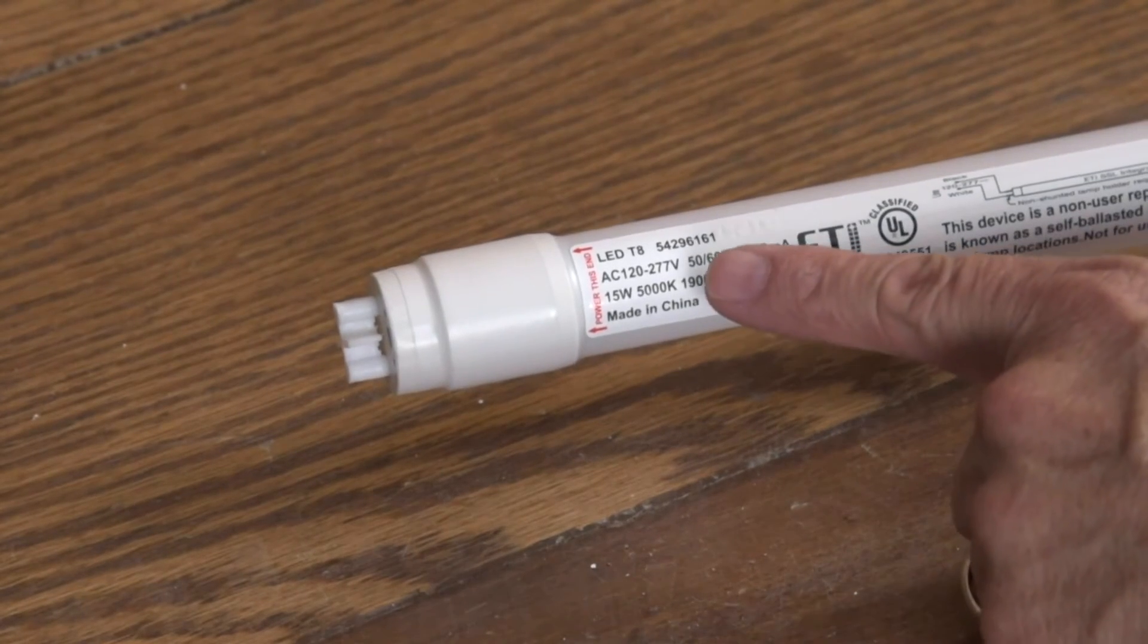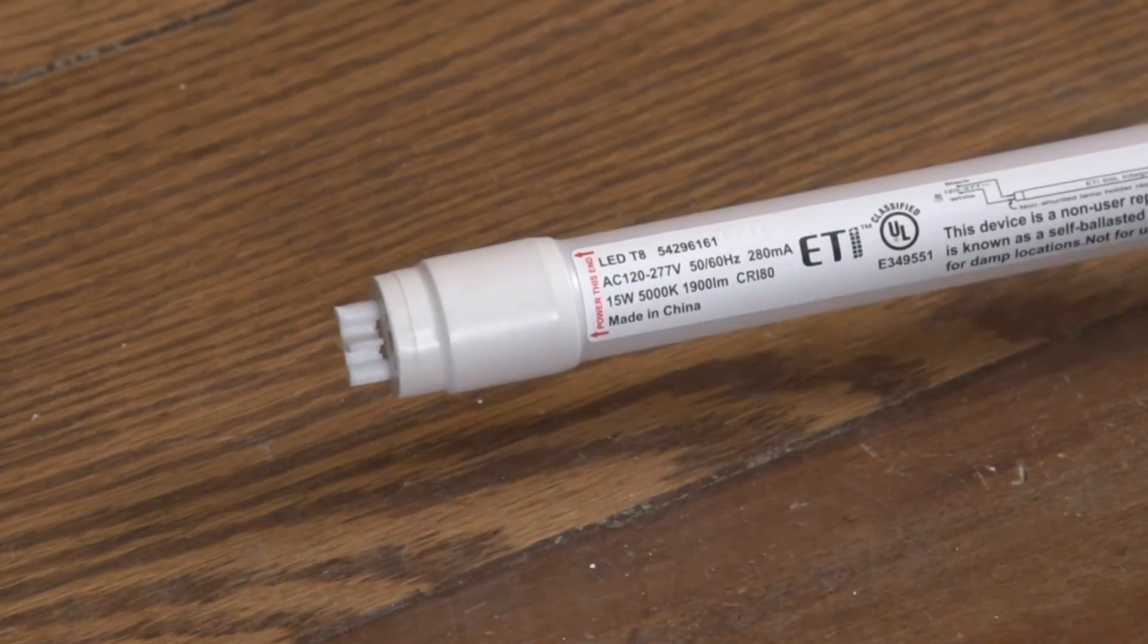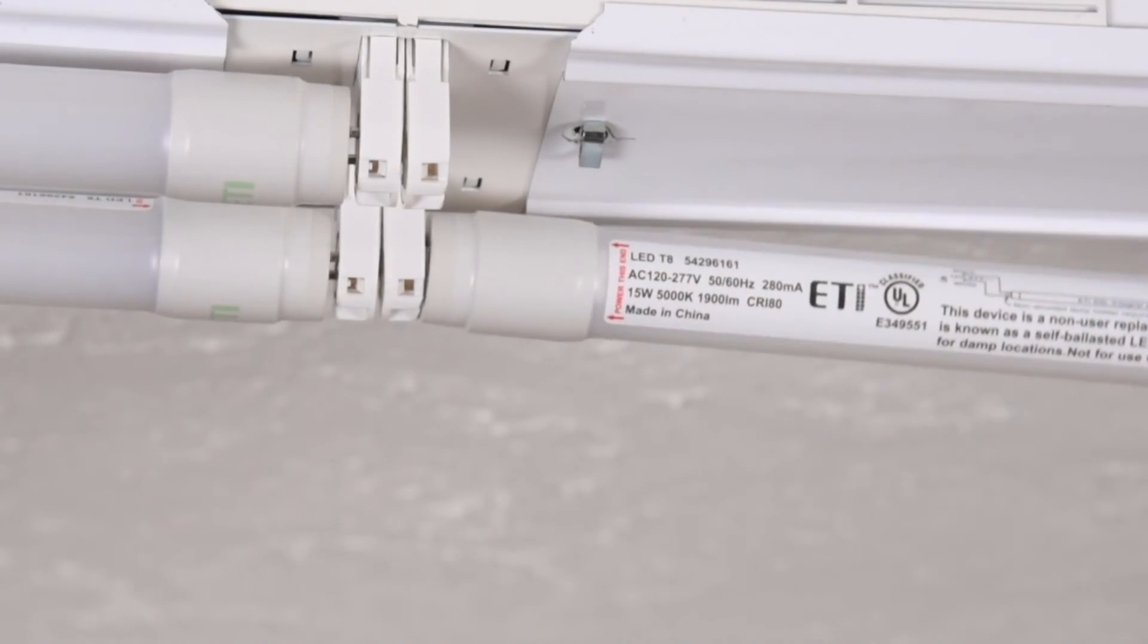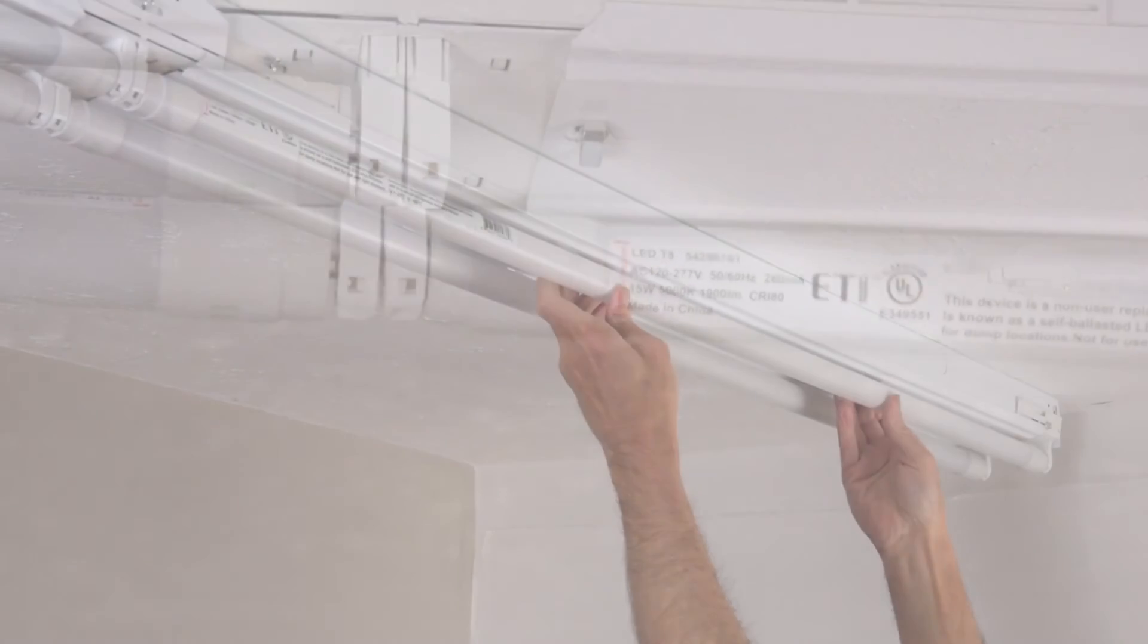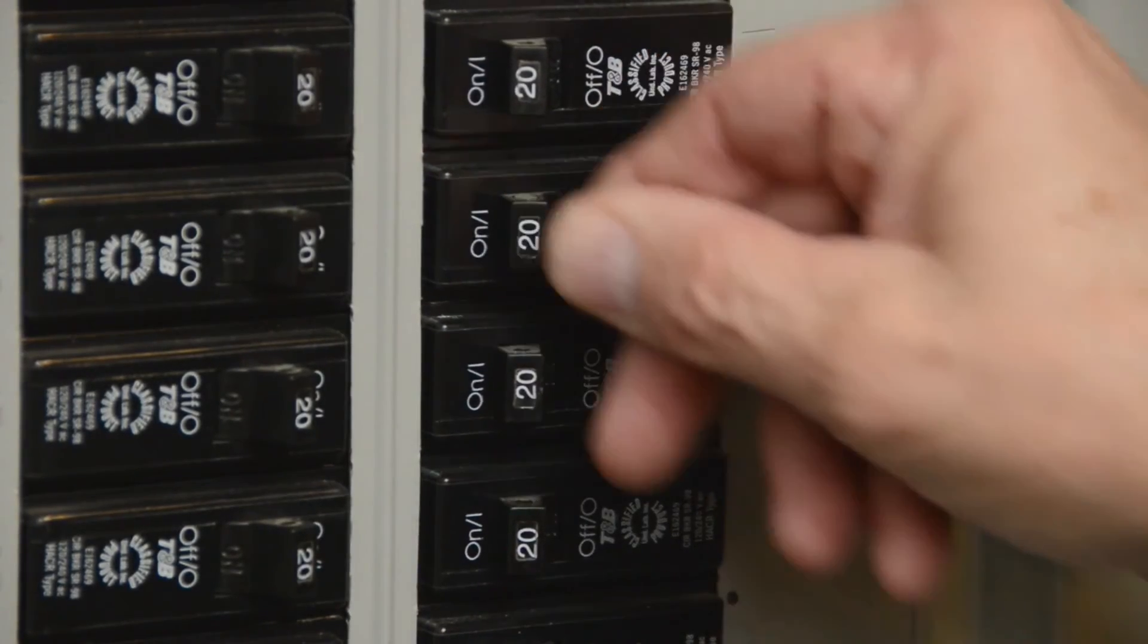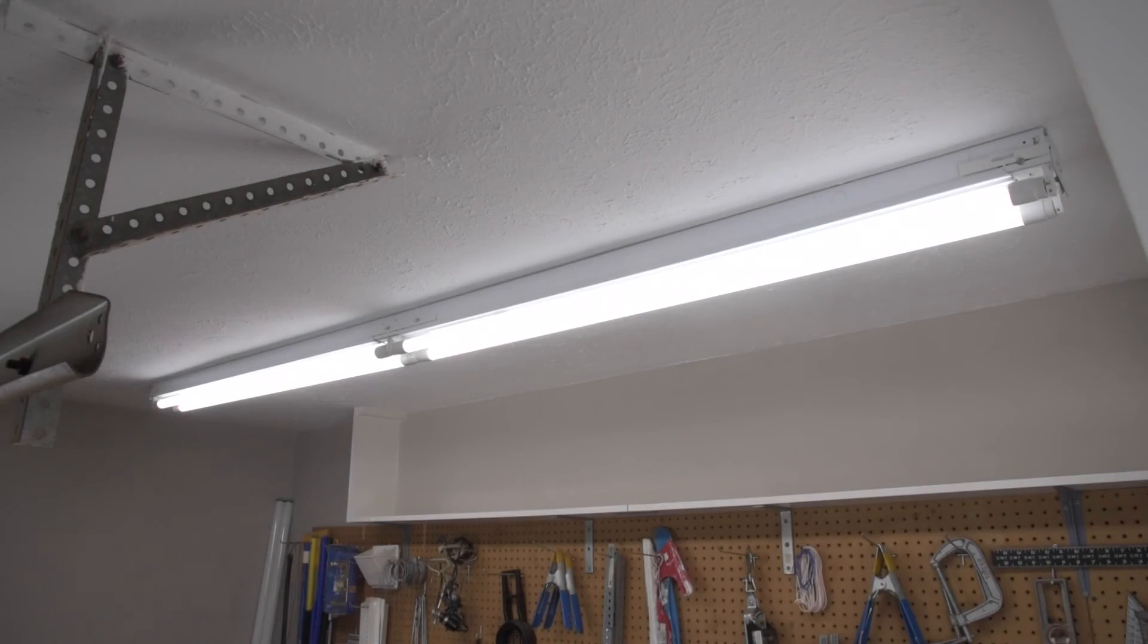Note the power this end label on each LED tube. Be sure to place those ends into the center power-carrying sockets. Now you can turn the power back on, and when you flip the switch, your ETI LED retrofit is ready to go.